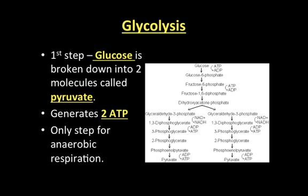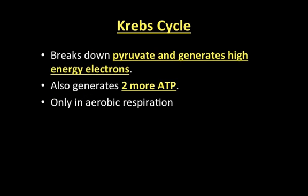If you're anaerobic, that's all you do — you get 2 ATP and stop at glycolysis. If we are aerobic, we move on to the Krebs cycle. The Krebs cycle essentially breaks down pyruvate, and we get some high-energy electrons from that — very similar to photosynthesis. This generates 2 more ATP. What's really important is that we need oxygen for the Krebs cycle to happen. If there is no oxygen, we stop at glycolysis. Because there's oxygen, we move on to the Krebs cycle and generate 2 more ATP, bringing our total to 4.